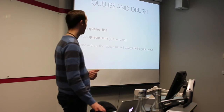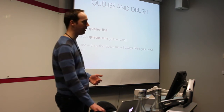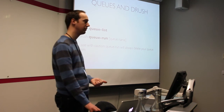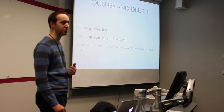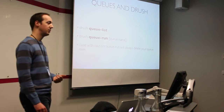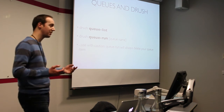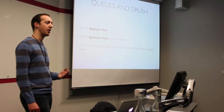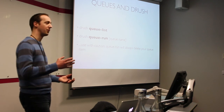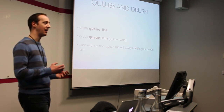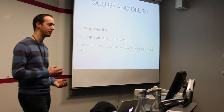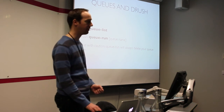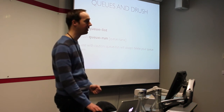In production environments, tools like Jenkins can trigger your queues — running a queue every five or ten minutes — and Jenkins will log the output and give you visibility on what's being processed, which can be tricky to get from crontab alone.